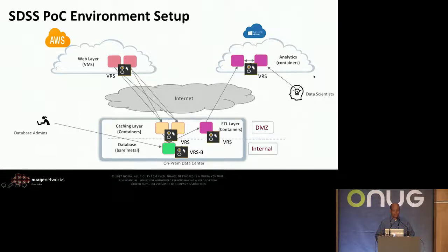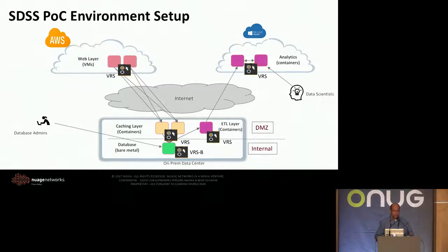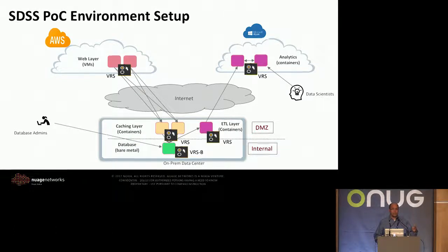I have a mix of workloads: web VMs, analytics. And at the bottom you will see my private data center, which has caching, database running on bare metal, and ETL running on containers. Nuage provides the VRS — it's a virtual routing and switching component, basically an agent that runs on bare metal servers or on top of the hypervisor on KVM, ESXi, or Hyper-V — to provide the networking and security policies for your environments.